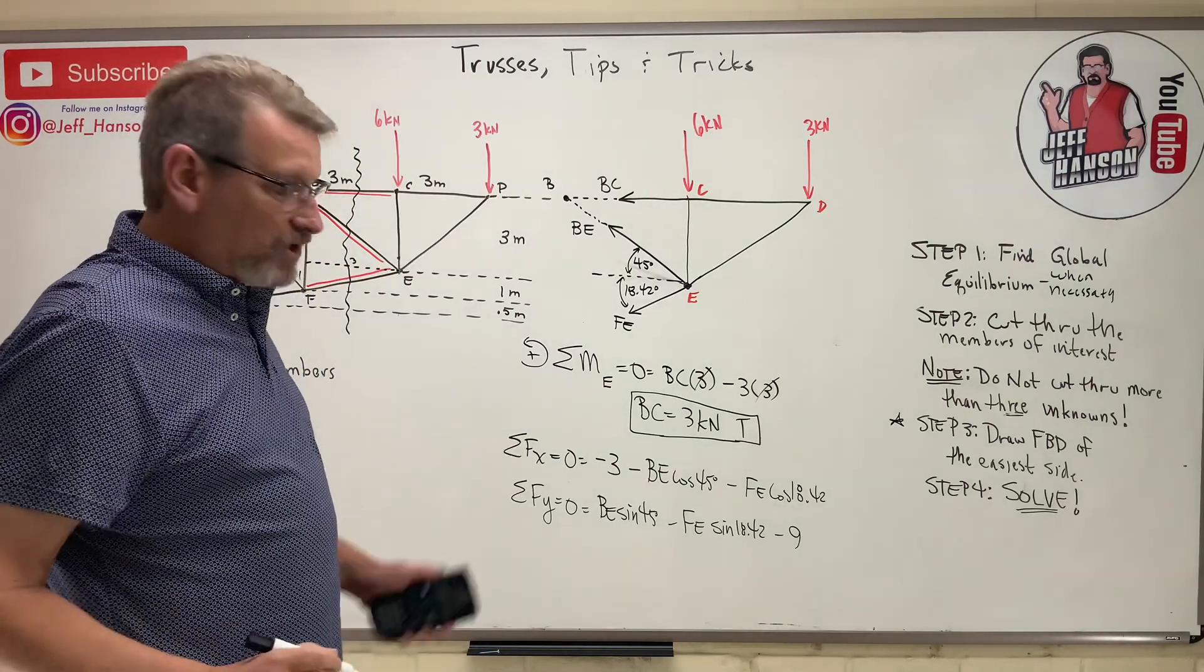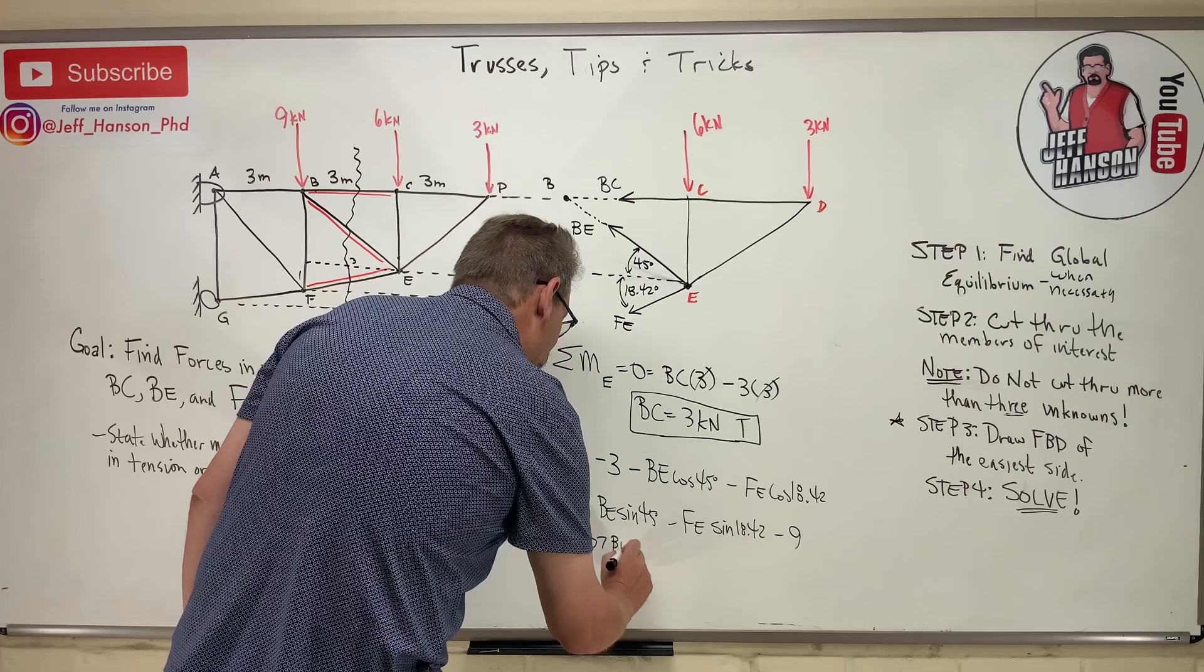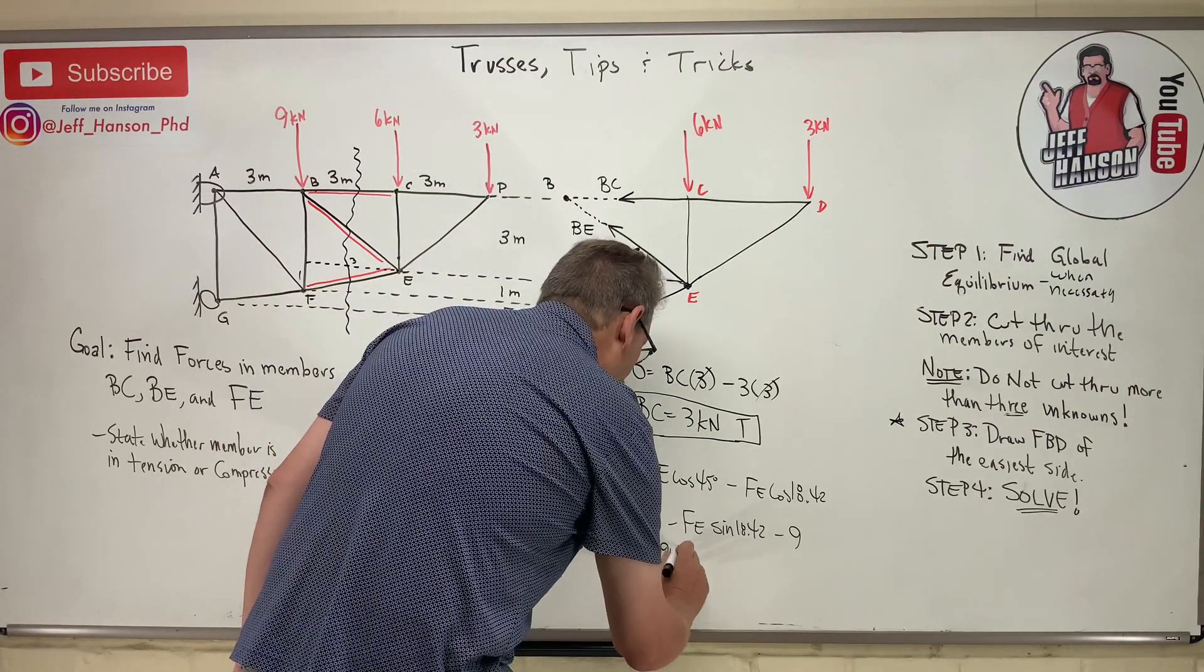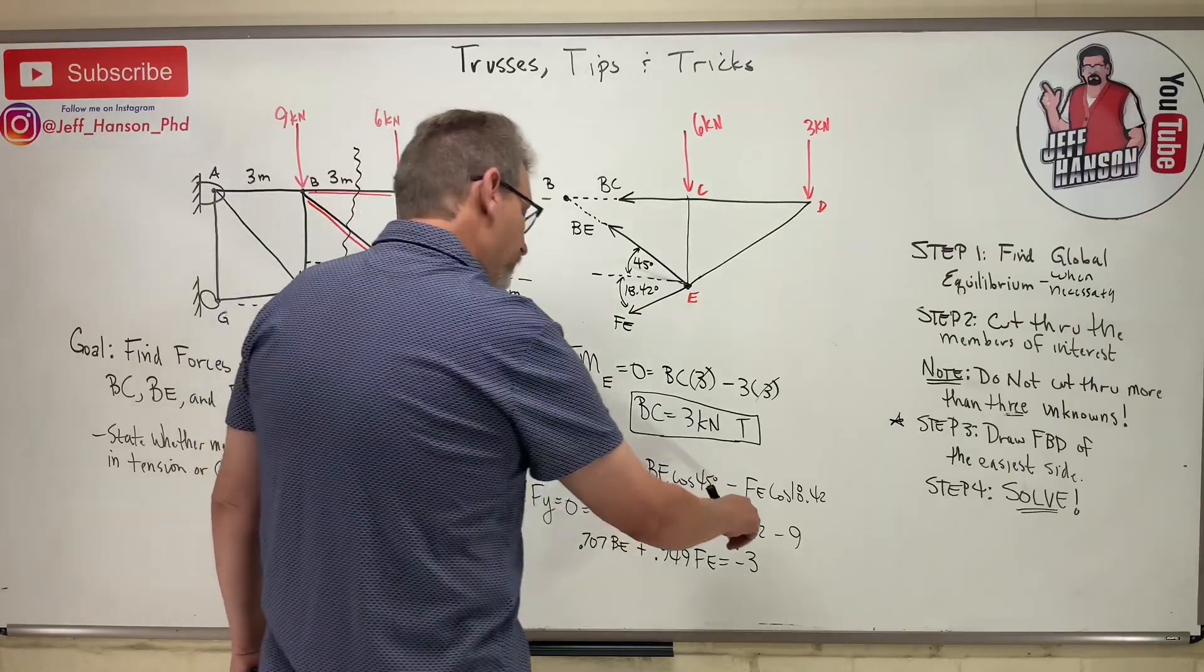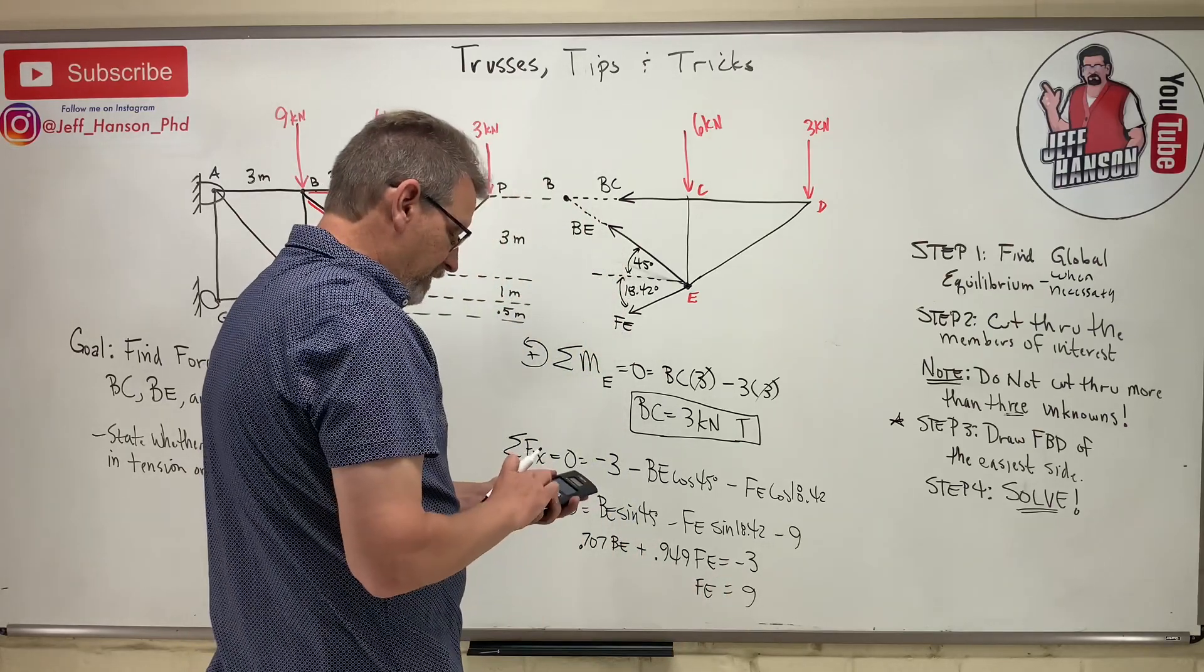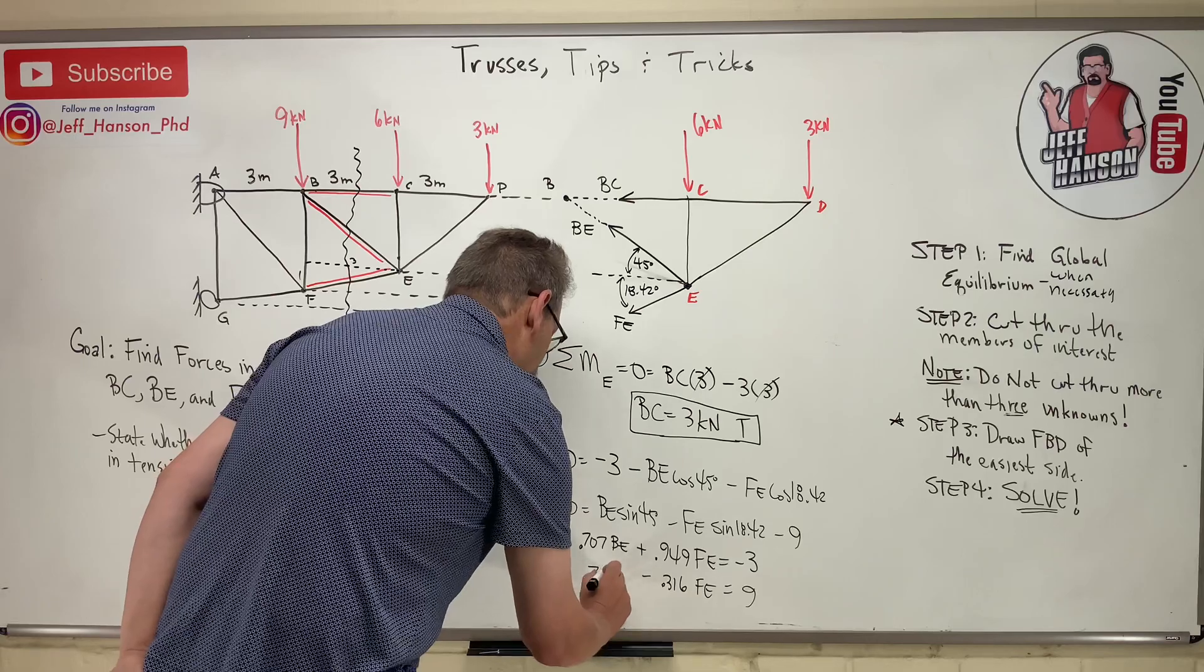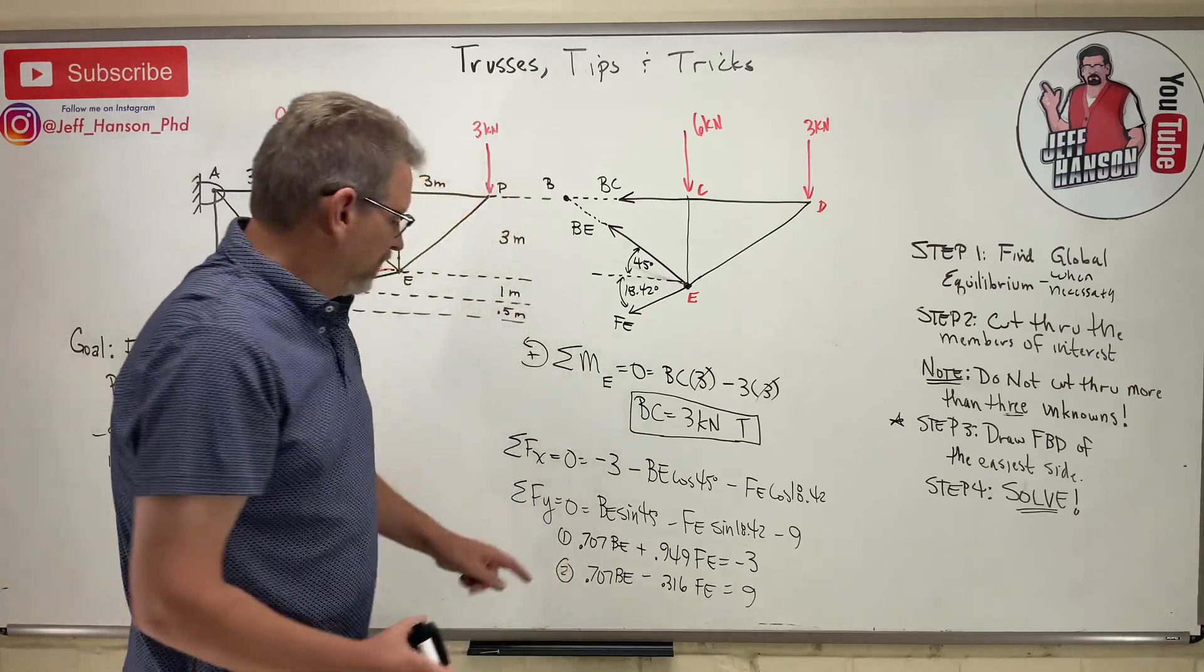So real quick, let me rewrite those equations so that they're in kind of my system solver format here. So 0.707 BE plus, what is the cosine of 18.42? 0.949 FE is equal to negative three. And then the other equation here, I'm just going to move the nine to the other side. So that equals nine. And what's that number? Sine of 18.42 is 0.316. That would be a minus. And then this guy would be a positive. So 0.707 BE. So there's equation number one, equation number two. And of course, this one came from the X, that one came from the Y.